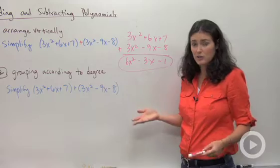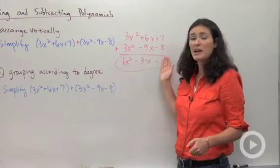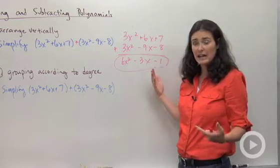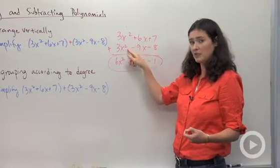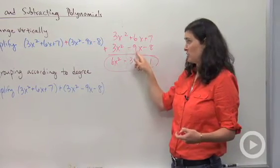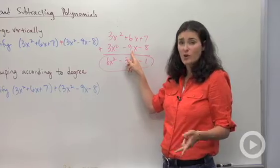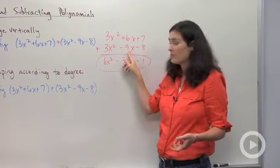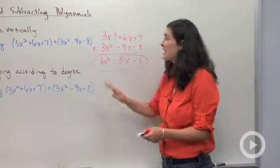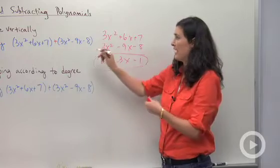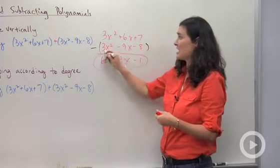This is one way you could do this problem by writing it vertically. Just be really careful when you're lining up things, that you line up your x squareds with your x squareds, your regular x's with your regular x's. Also, if this had been a subtraction problem, be really careful when you write it, that you remember that this minus sign would apply to each of these terms.